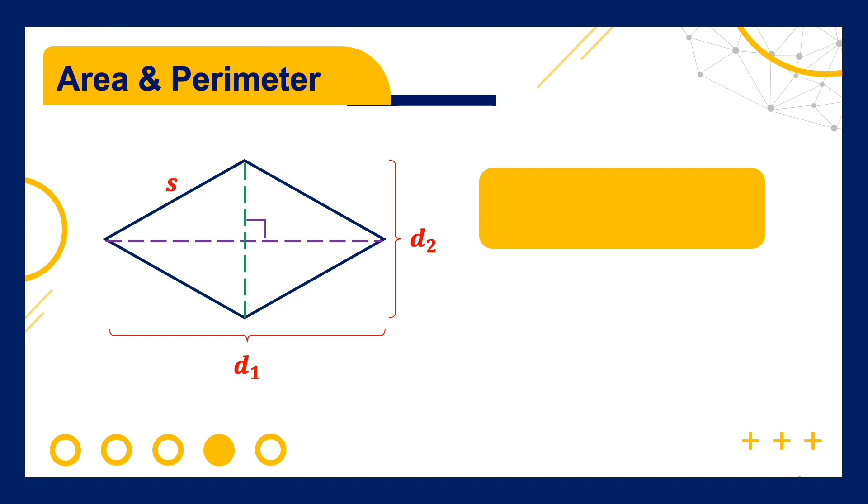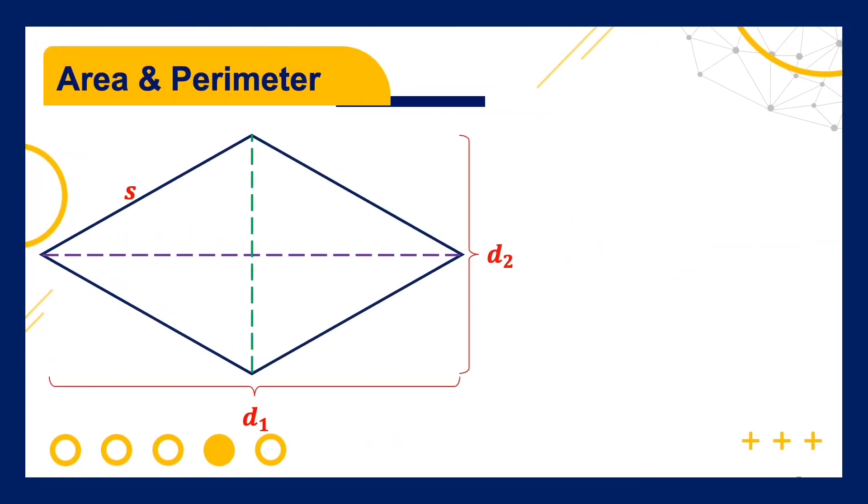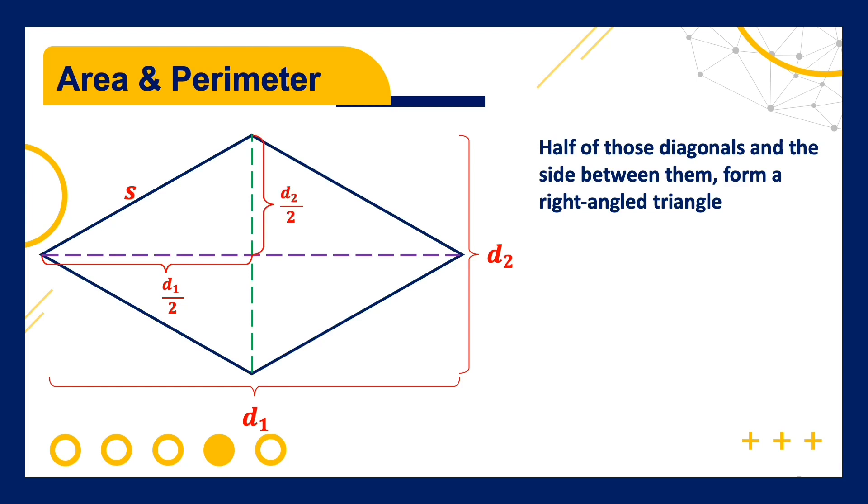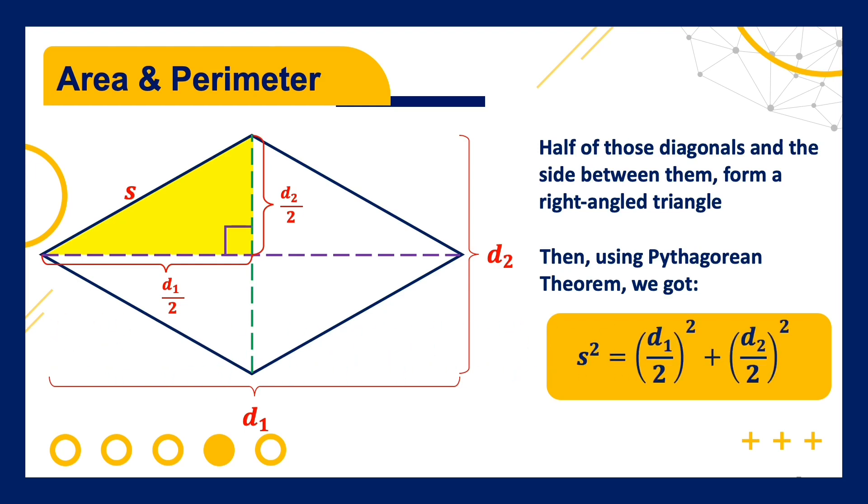The perimeter and the area of rhombus can be calculated using this formula. As you can see, half of those diagonals and the sides between them form a right-angled triangle, so that Pythagorean theorem can be applied to find the length of S.